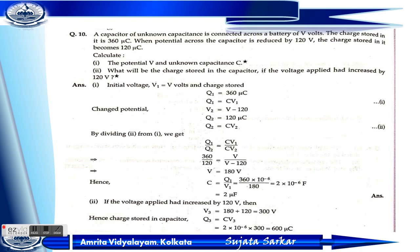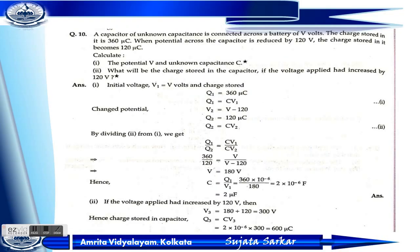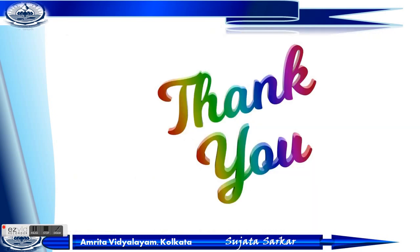If the voltage applied is increased by 120 volt, then V3 = 180 + 120 = 300 volt. The charge stored Q3 = C × V3 = 2×10⁻⁶ × 300 = 600 microcoulomb. This numerical is very very important.